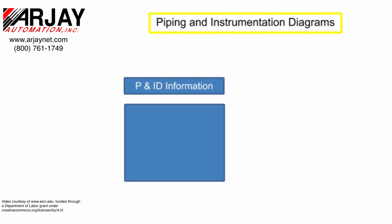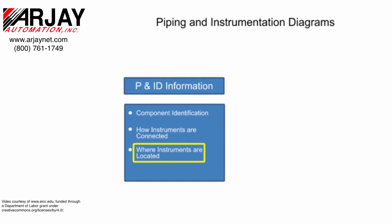Piping and instrumentation diagrams provide information that include component identification, how instruments are connected, where instruments are located, and their function within a process.